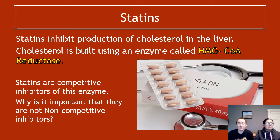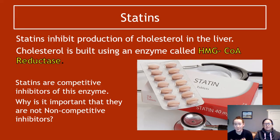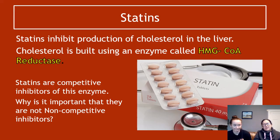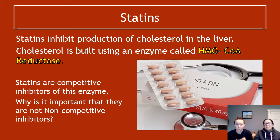Statins are a drug you can take to inhibit the production of cholesterol in the liver. Cholesterol is built using a specific enzyme, and statins are competitive inhibitors of that enzyme — so they competitively inhibit it, stopping it from building cholesterol. The reason it's better that they're competitive rather than non-competitive is that non-competitive inhibition tends to be permanent. We don't want to completely block cholesterol production, since we still need some — a competitive inhibitor allows some cholesterol production to continue while reducing the overall amount.